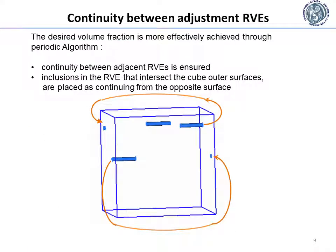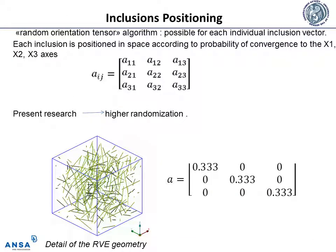For the purposes of this research, the so-called periodic geometry algorithm was used. Periodicity across surfaces means that continuity between adjacent RVEs is ensured. This is achieved by inclusions in the RVE that intersect the cube outer surfaces being cut, with the remainder placed continuing from the opposite surfaces, as shown in the figure. Additionally, the algorithm takes into account a minimum separation distance between the surfaces of any two inclusions.